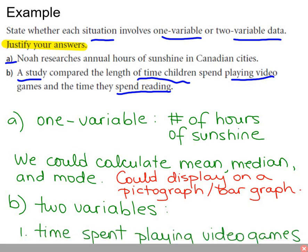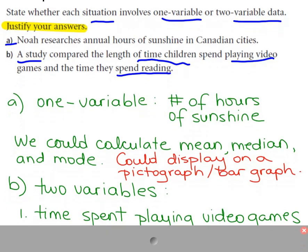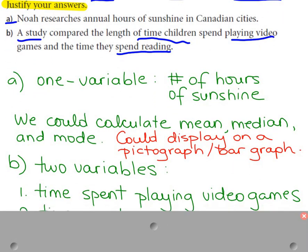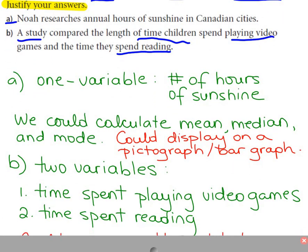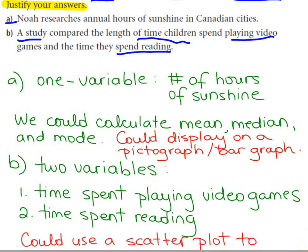And that's why it's the two variables, a data set, time spent playing video games. And the way that we could show the data is by perhaps a scatter plot. So there are two variables in this case that are changing, and therefore there's a two variable data set.